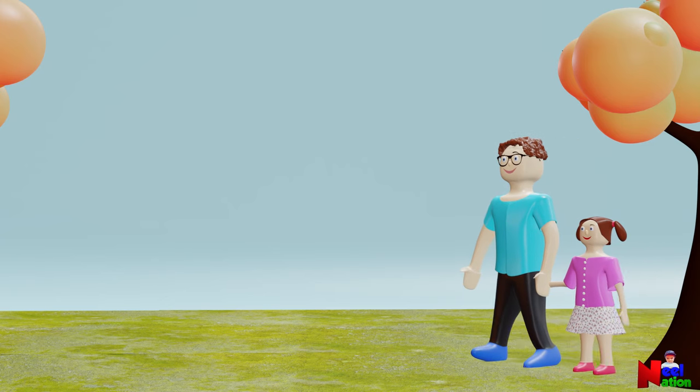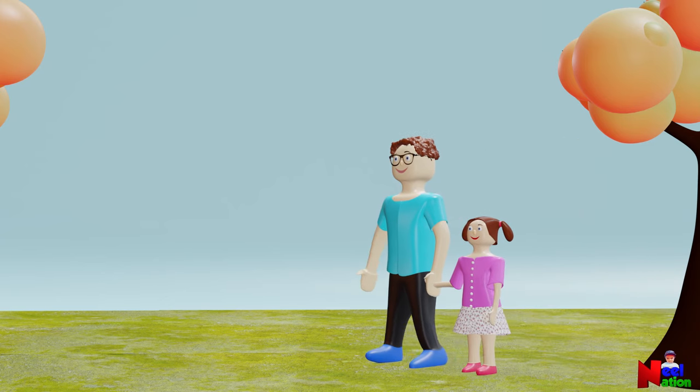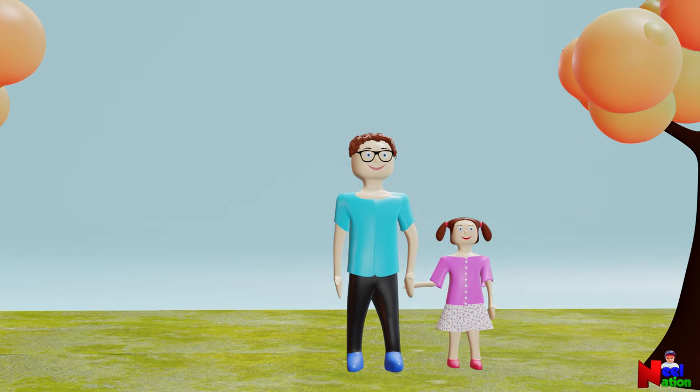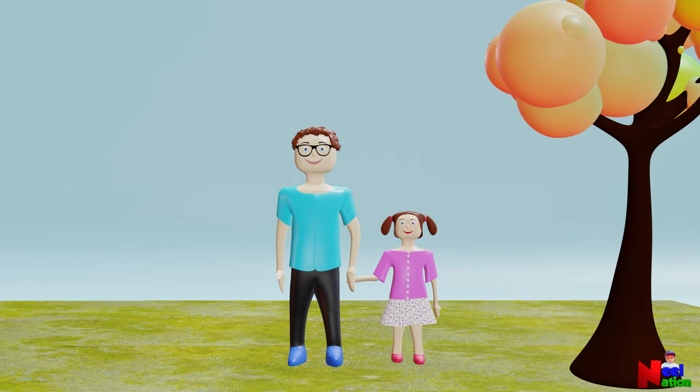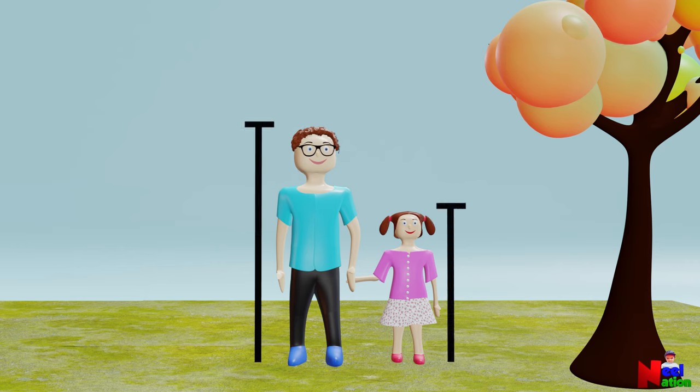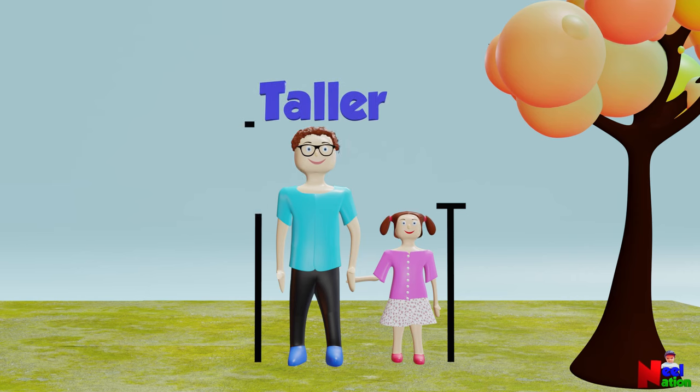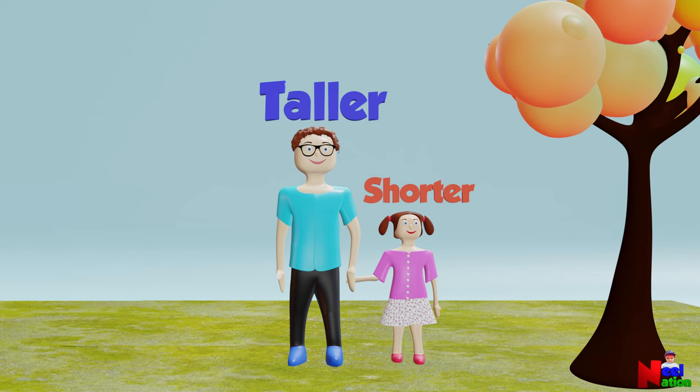Meet Emma and her dad, John. Let us compare the height of Emma and her dad. One of them is taller and the other is shorter. Height is the vertical distance from base to top. So you can say that Emma's dad is taller and Emma is shorter.